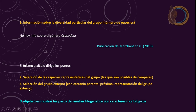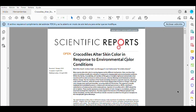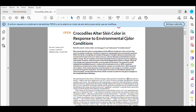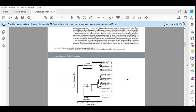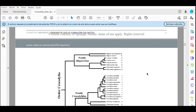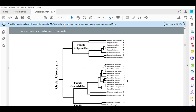El mismo artículo dirige los puntos 2 y 3: la selección de las especies representativas del grupo, es decir, las que son posibles de comparar. Y también puedo seleccionar a partir de esa información el grupo externo, que tiene una cercanía parental próxima. Al final de cuentas, el objetivo es mostrar los pasos del análisis filogenético con caracteres morfológicos. Estamos viendo el artículo científico de Merchant et al., 2018, donde viene un árbol filogenético que involucra al grupo de los cocodrilos. Esta va a ser una referencia que me ayuda a obtener el conjunto de taxones de interés.